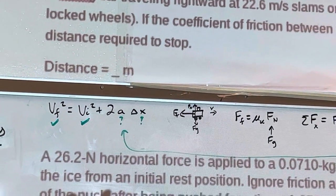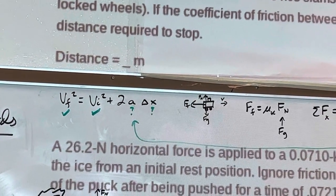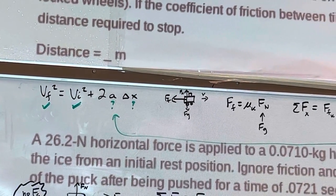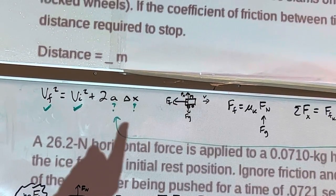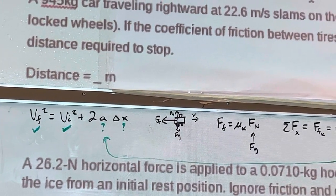So the two things we don't know are acceleration and displacement. So then the question becomes, is there a way to figure out one of those things? Well, one of them is what we're looking for. Right? Distance, displacement, straight line, same thing.